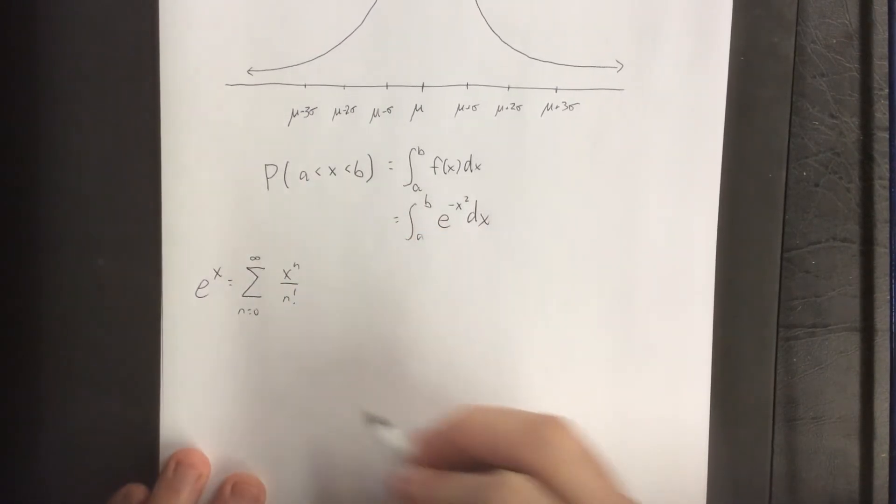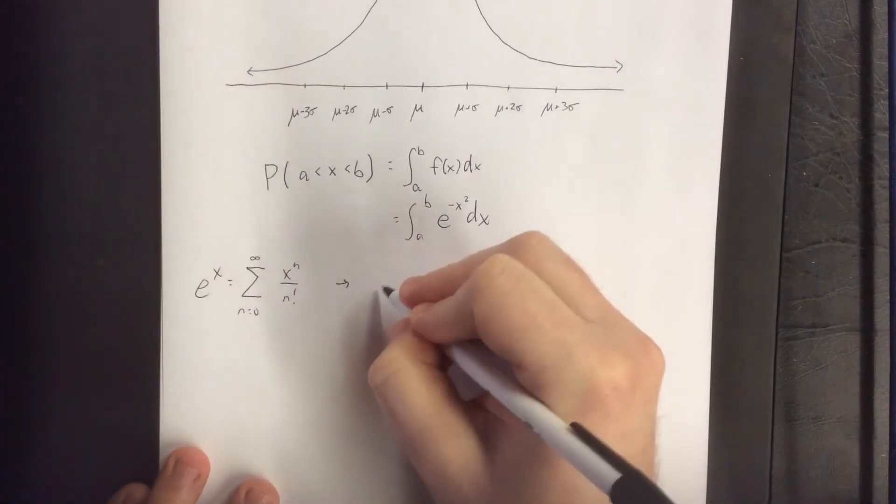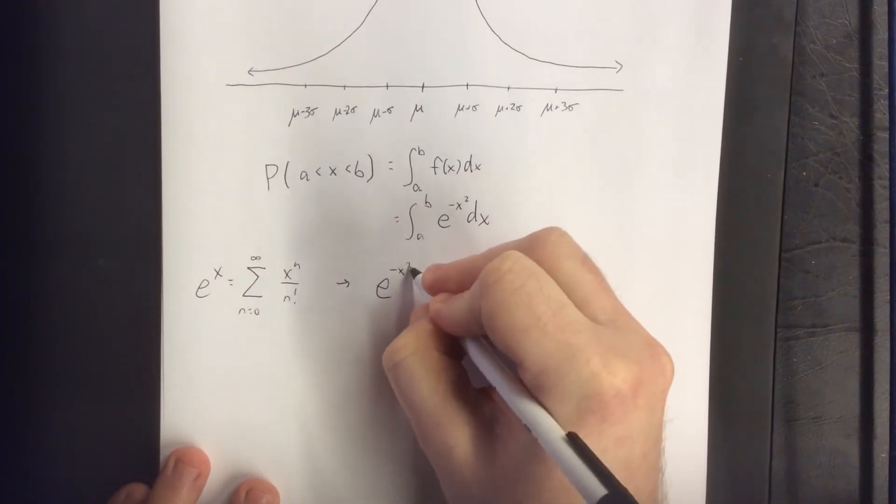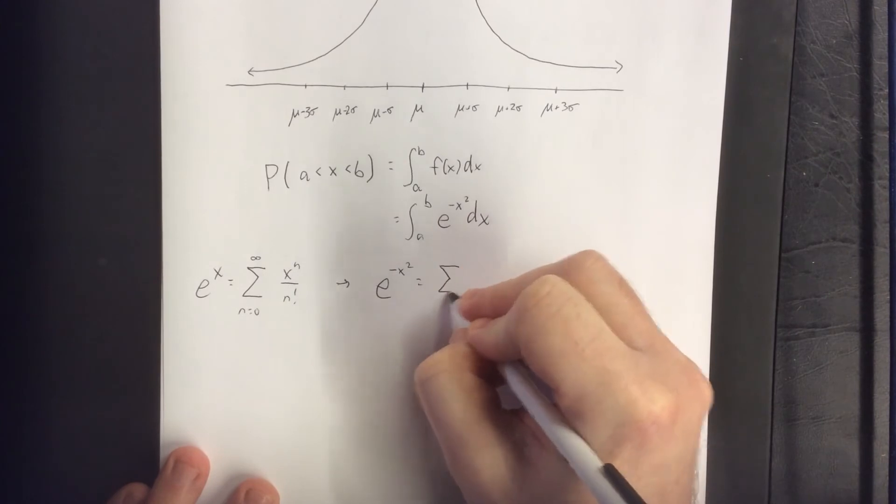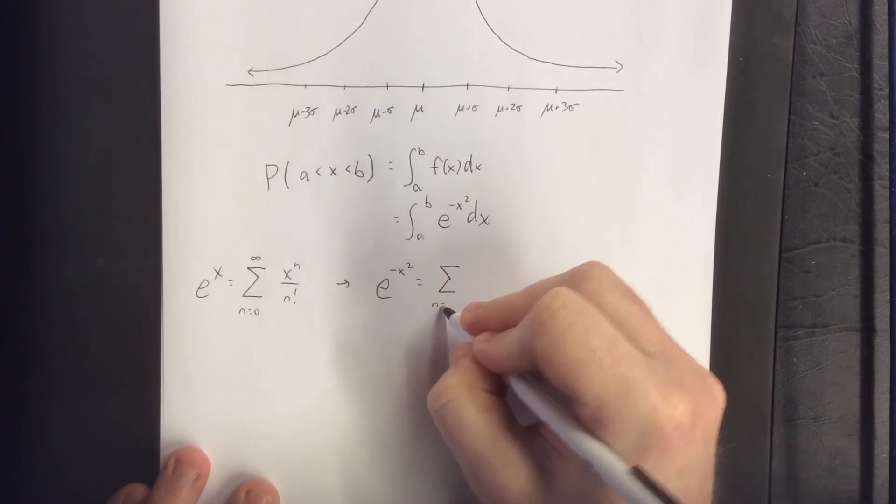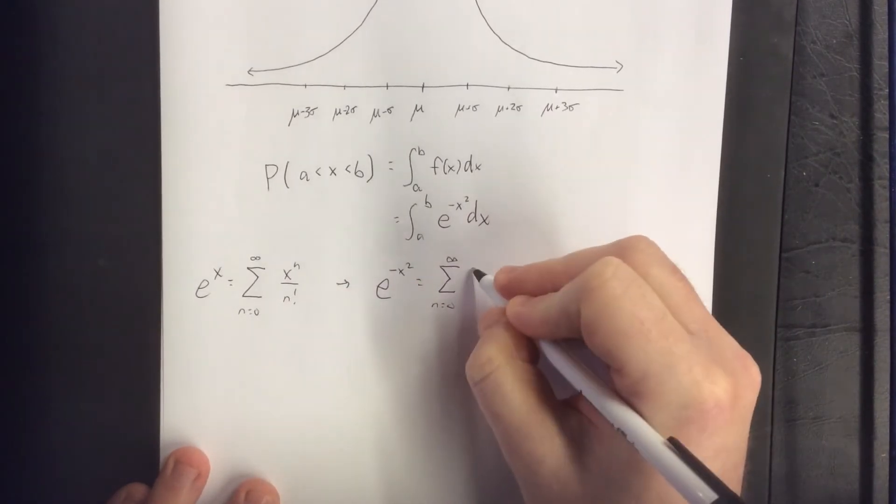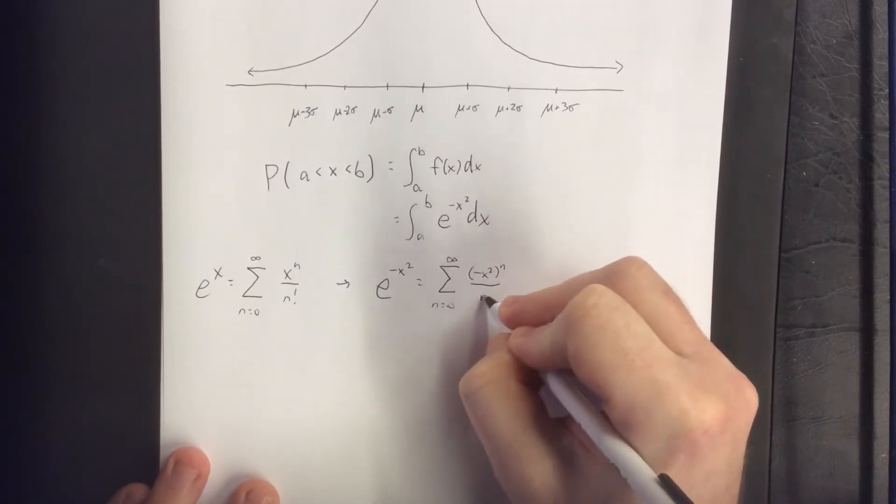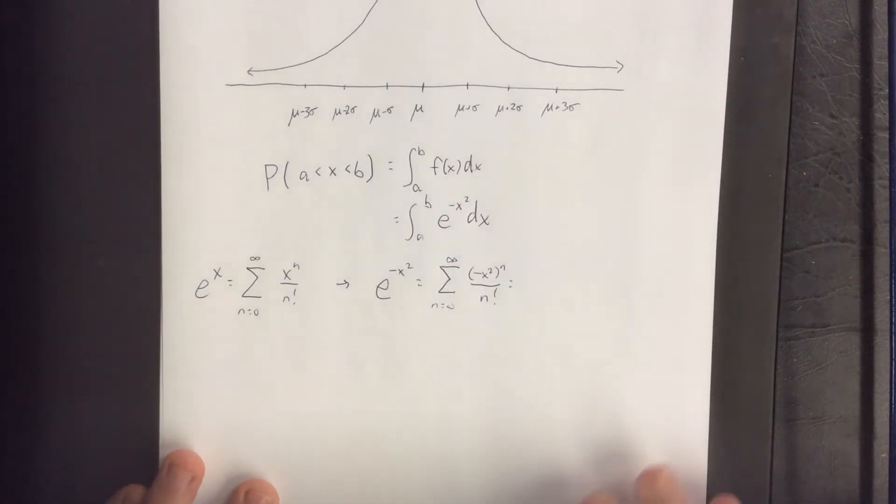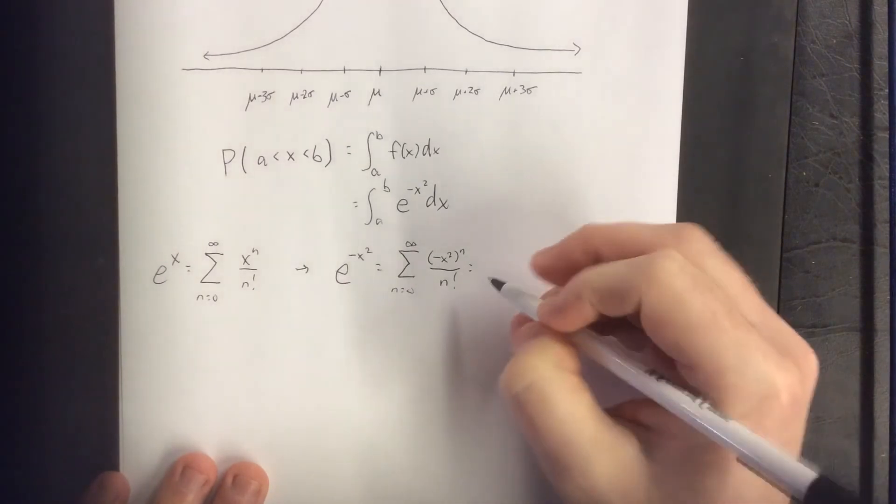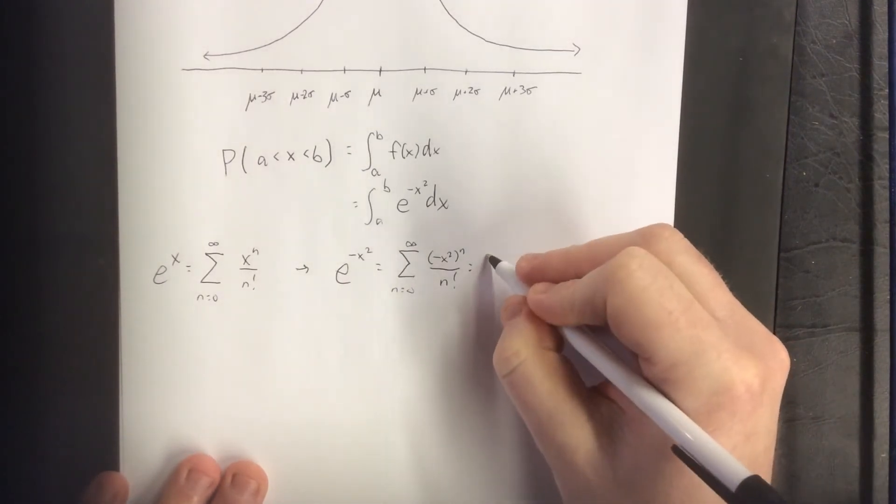So if this is something we know to be true, it follows that e to the negative x squared would be what we get by replacing our x with a negative x squared. Now if we were to expand this out a few terms, we would see some patterns relatively quickly.